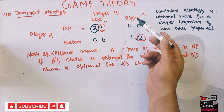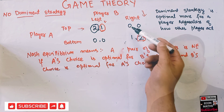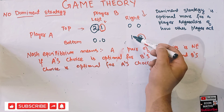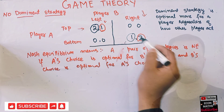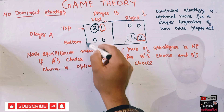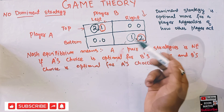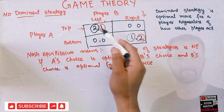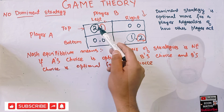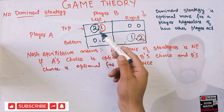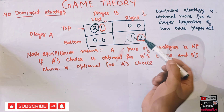If player B chooses right, player A again has two options: top or bottom. If he goes top he gets zero as payoff; if he goes bottom he gets one as payoff, so he is better off going bottom. To see whether this game has Nash equilibrium, we focus on the cells — if both values in a cell are encircled, then that cell is a Nash equilibrium. Here we have two cells where both values are encircled, so this game has two Nash equilibria.